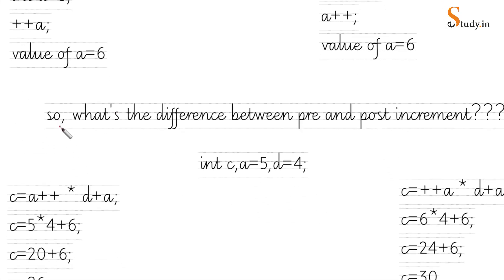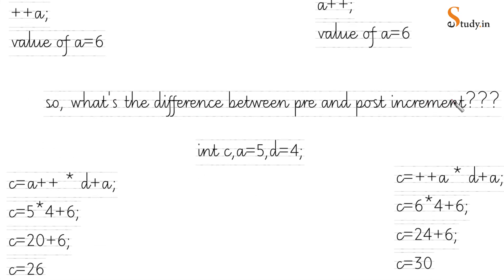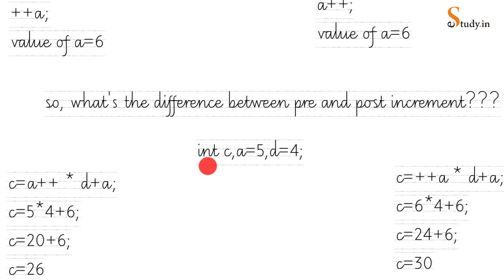You must be wondering: what is the difference between pre and post increment? When pre and post are used standalone — not inside an expression — the answer is the same. But when they are used inside an expression, the values can be different. To understand this, let's take up this example where we have three variables: a = 5, d = 4, and another variable c.